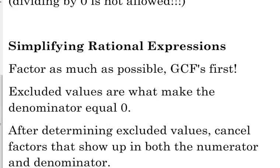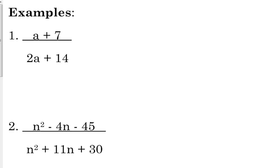Excluded values are something we're going to talk about — those are what make the denominator equal zero. After we factor, we figure out what we have to exclude. Then we cancel any factors that show up in both the numerator and denominator. Let's look at number one: (a + 7) over (2a + 14). We need to factor. The numerator is a linear expression — you can't factor linear expressions unless there's a GCF, and there's not a GCF in the numerator.